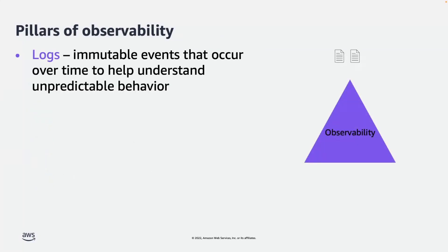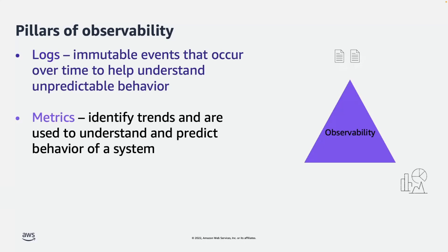So now let us talk about what are the pillars of observability. It starts with logs, where you need to collect your logs from your applications and infrastructure to understand how they are performing. The second one is metrics — you want to understand how they react over a period of time, so that you can see whether a system is performing as expected or you need to do something in order to improve your system to achieve better customer outcomes or build better customer experiences.